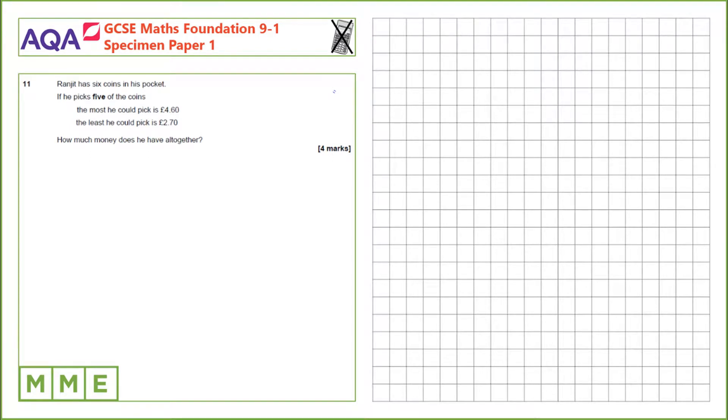Question 11. Ranjit has six coins in his pocket. If he picks five of the coins, the most he could pick is £4.60. The least he could pick is £2.70. How much money does he have altogether?